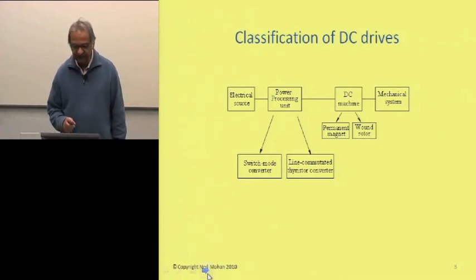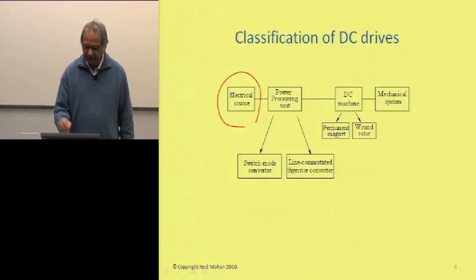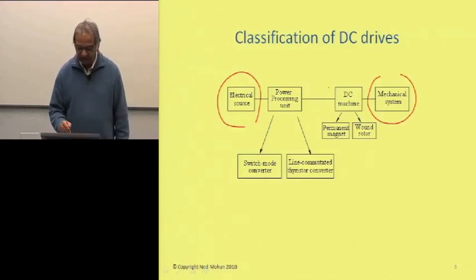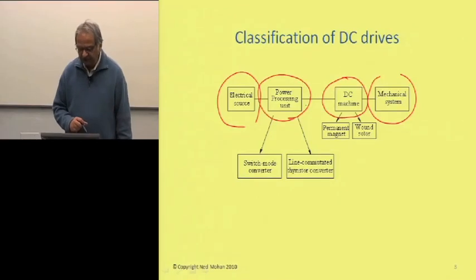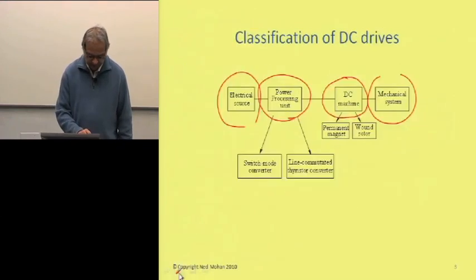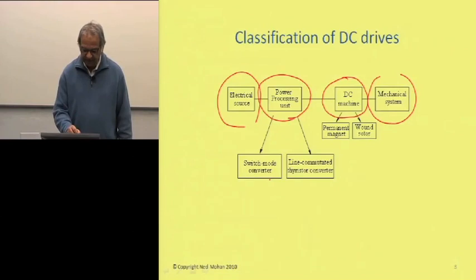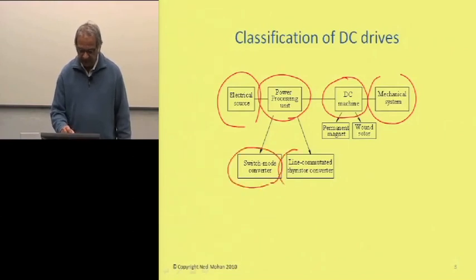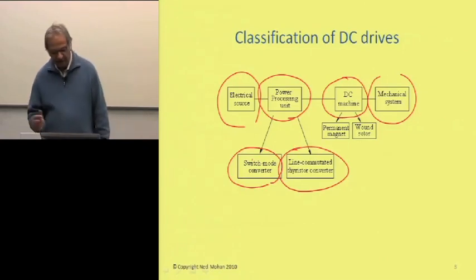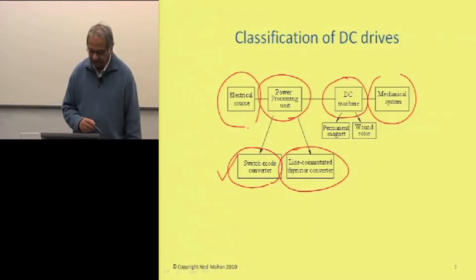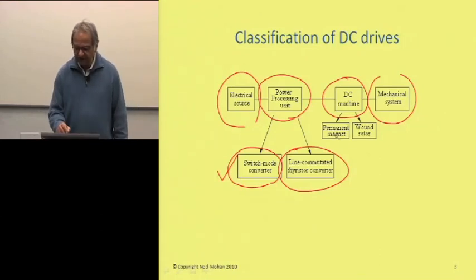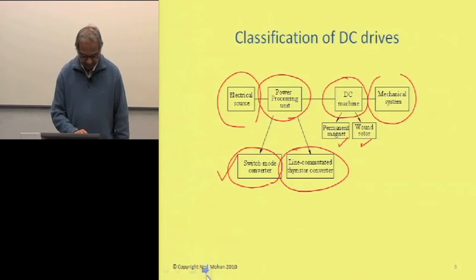In terms of classifying DC drives, we have an electrical source and a mechanical system, and between the two we have a DC machine and a power processing unit. This power processing unit may be made up of switch mode converters or line-commutated thyristor converters. By and large, now it's really the switch mode converter that is used. As far as the DC machine is concerned, it may have permanent magnets or it could have a wound field, as you'll see in the next slide.